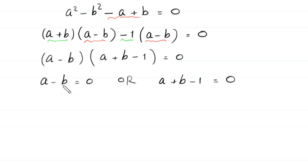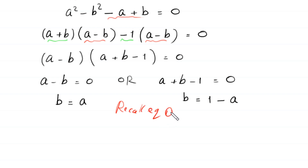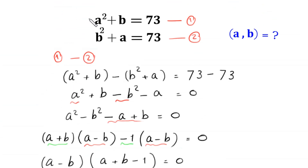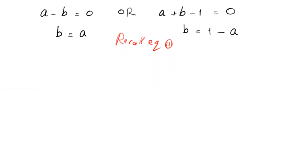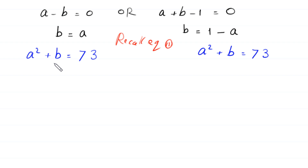From the equation A minus B equals 0, making B the subject gives B equal to A. From the equation A plus B minus 1 equals 0, making B the subject gives B equal to 1 minus A. Now we recall equation 1: A squared plus B is equal to 73. First, in this equation, we replace B with A.